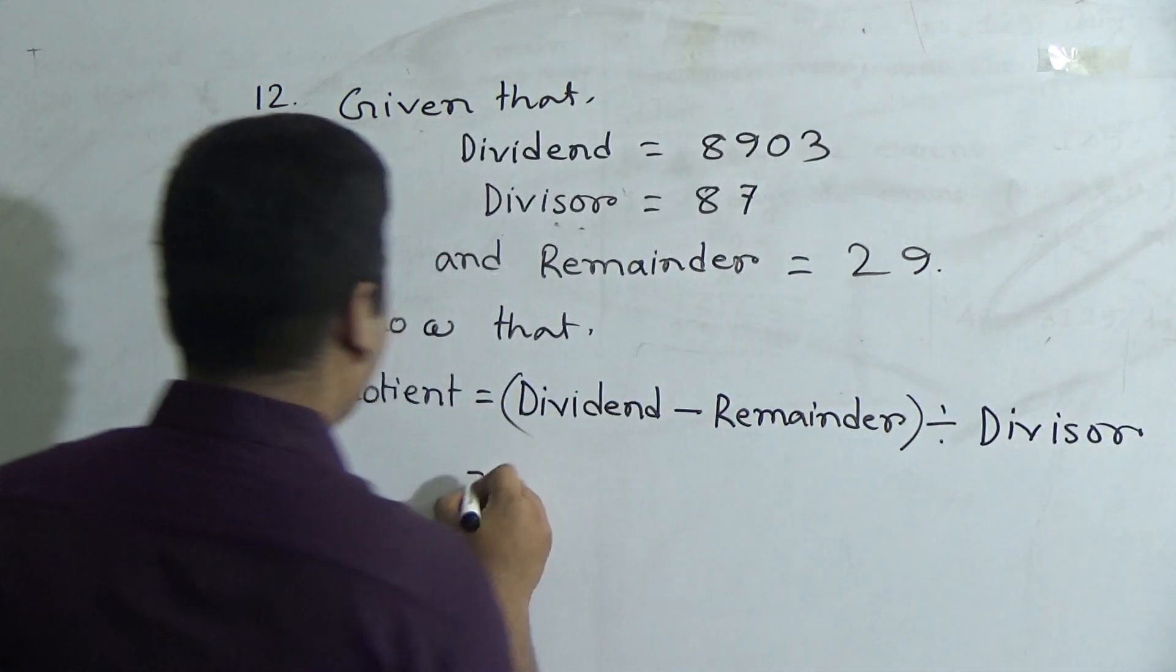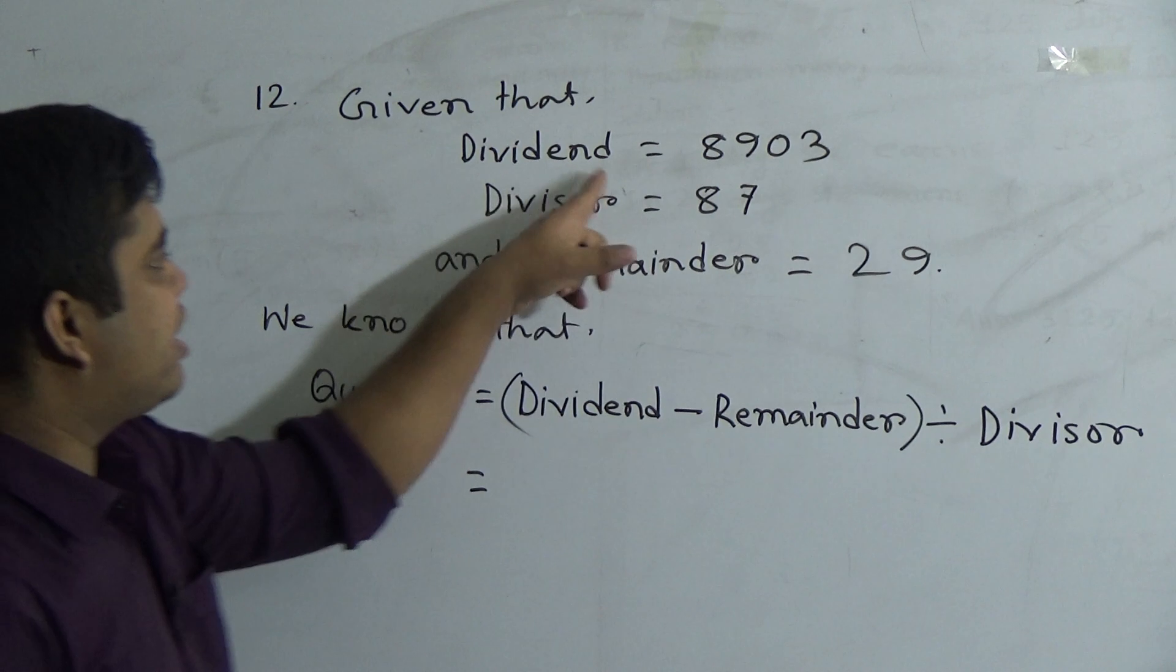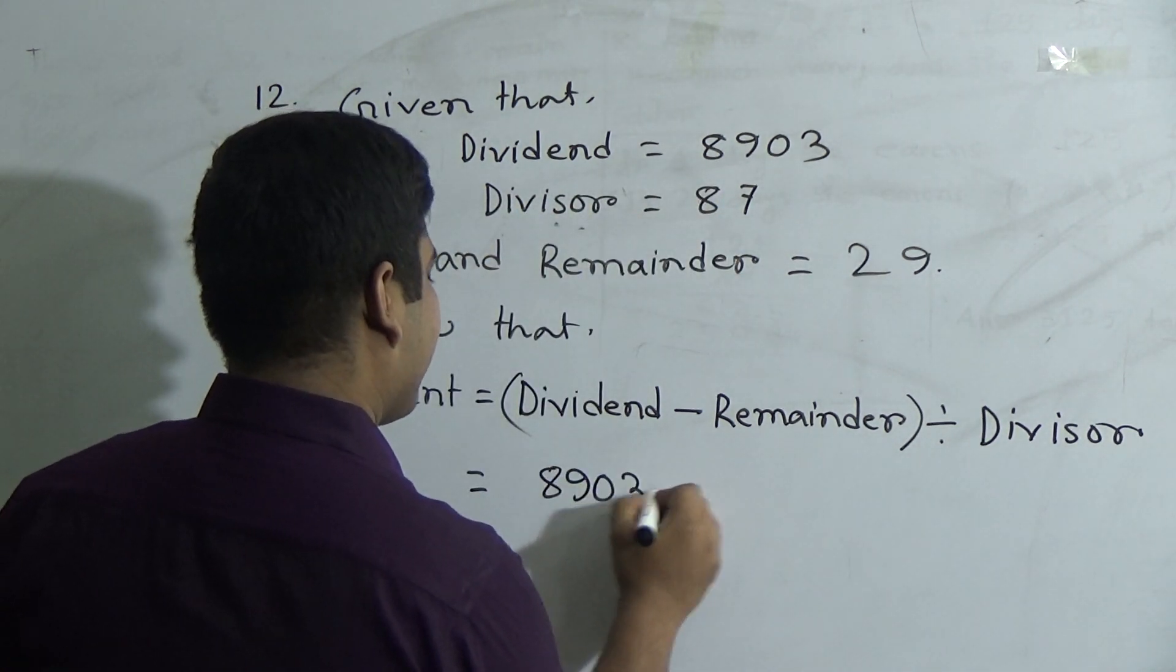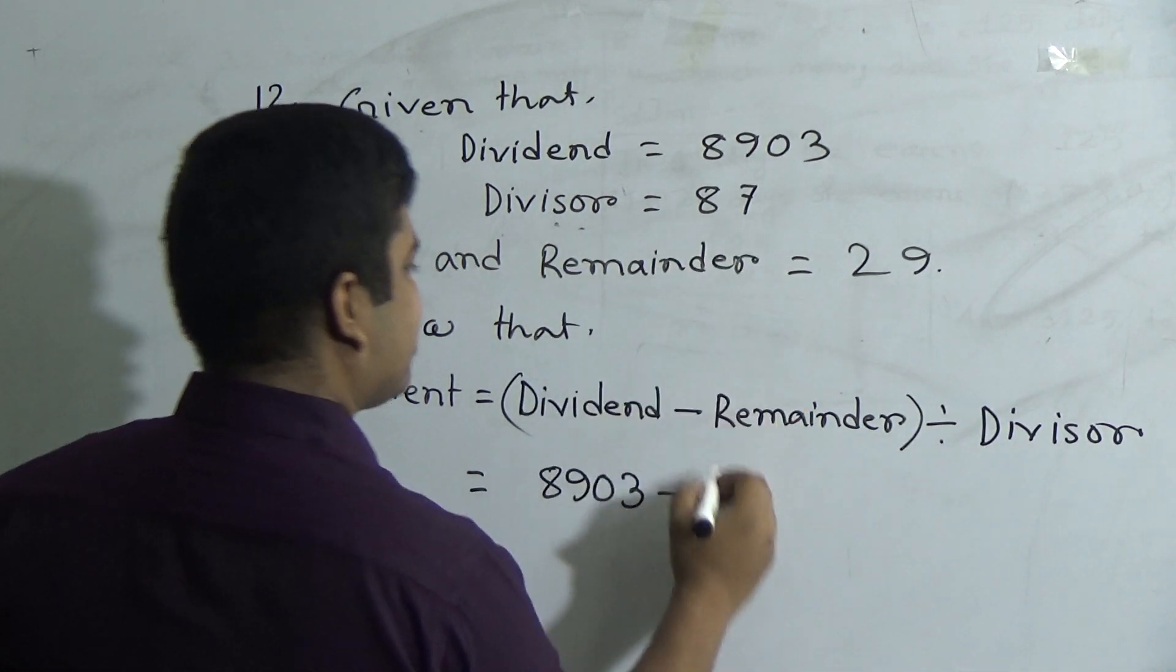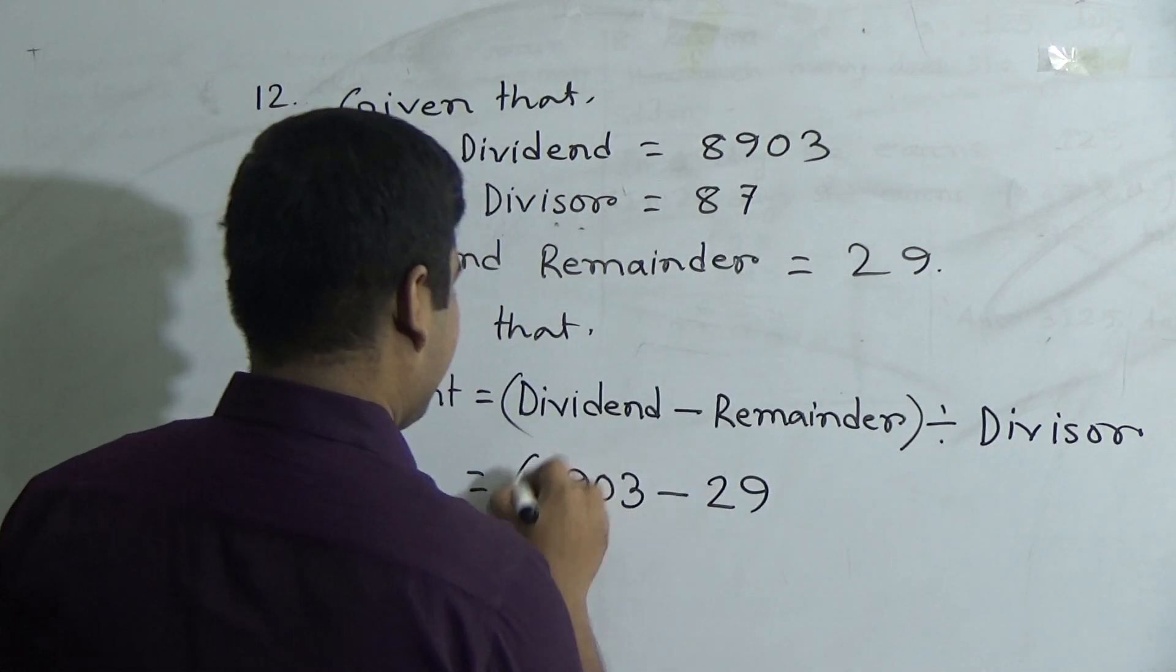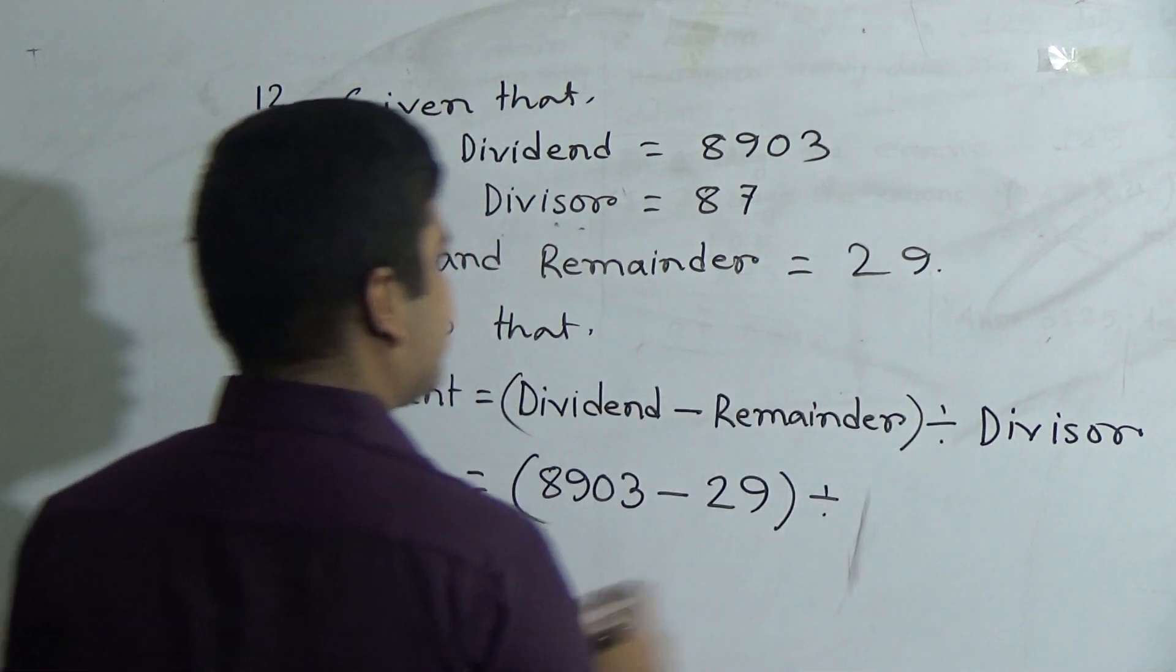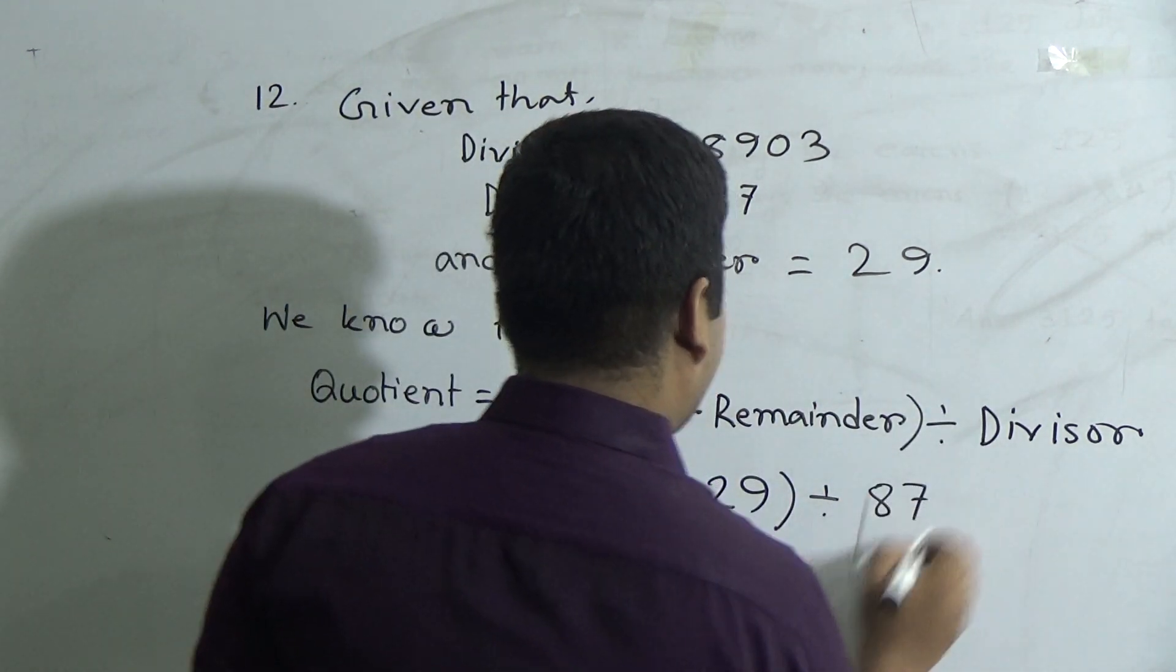Okay, now we put the value. Here, dividend is 8903 minus remainder is 29, divided by divisor is 87. So I write this.